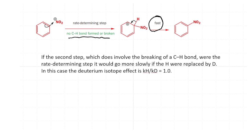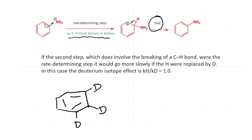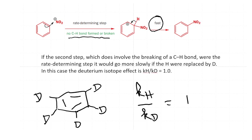When we come to electrophilic aromatic substitution, the first step is reaction with the electrophile producing a cation, which then loses a proton to form the product. In the first step, no C–H bond is formed or broken, so we cannot expect a primary hydrogen isotope effect. However, when we replace all hydrogens by deuterium and measure the rate, we find KH/KD equals 1. This tells us that C–H bond breaking, although it occurs, is not involved in the rate-determining step — the rate-determining step is the loss of aromaticity in the first step.